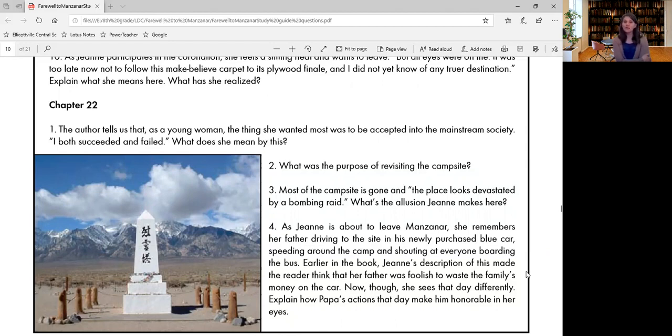Question three, most of the campsite is gone and the place looks devastated by a bombing raid. What's the allusion Jean makes here? And so we can partially answer this already, although I want you to look at it in context as well. So a reminder about what an allusion is. An allusion is a reference to another piece of literature, something in history, an event or person that they expect you to know and be able to reference. So what is she talking about here? A bombing raid. What was that bombing that she would be alluding to? The bombing of Hiroshima. So keep that in mind, how does that connect to what was here?